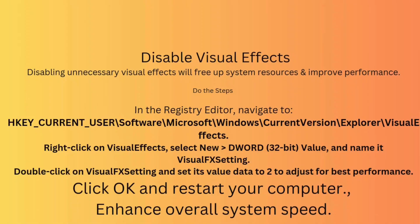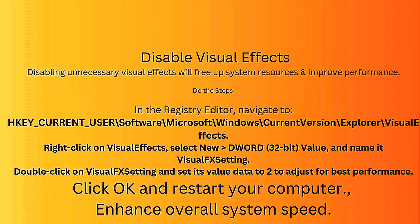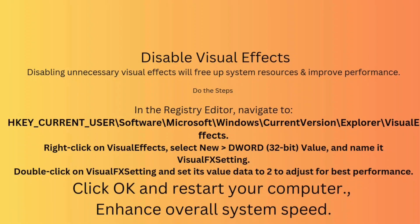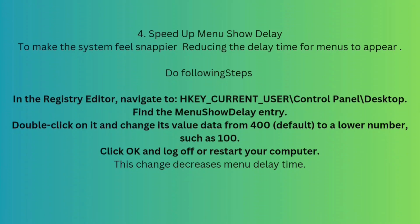To improve system performance, you can also disable visual effects. In regedit, navigate to HKEY_CURRENT_USER > Software > Microsoft > Windows > CurrentVersion > Explorer > VisualEffects. Right-click VisualEffects, select New > DWORD (32-bit) Value, and name it 'VisualFXSetting'. Double-click on VisualFXSetting and set its value data to 2 to adjust for best performance. Click OK and restart your computer. This effectively uses system resources and increases user experience.